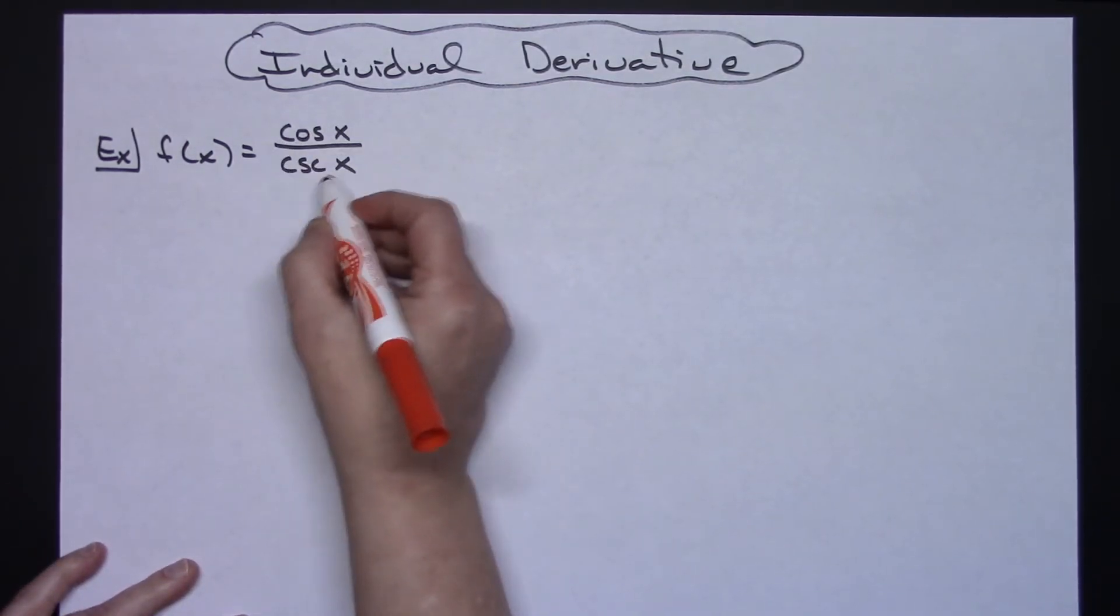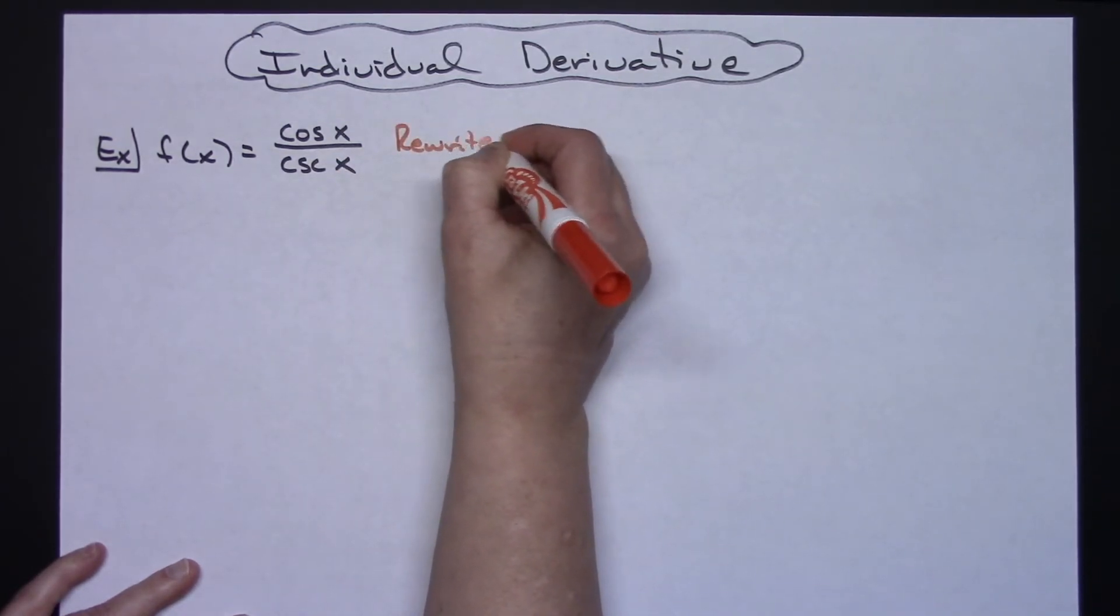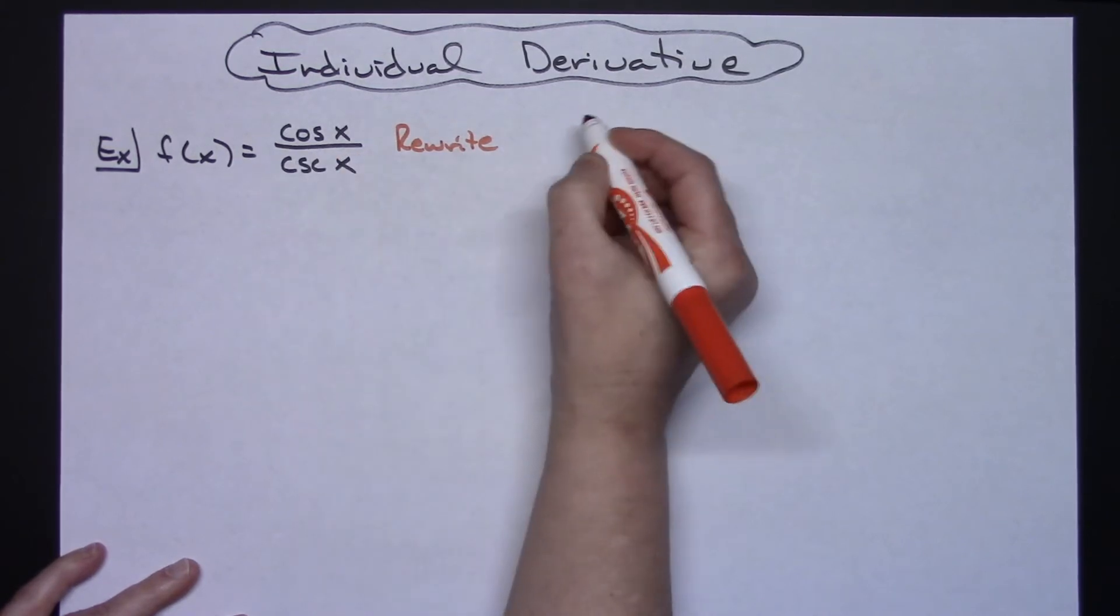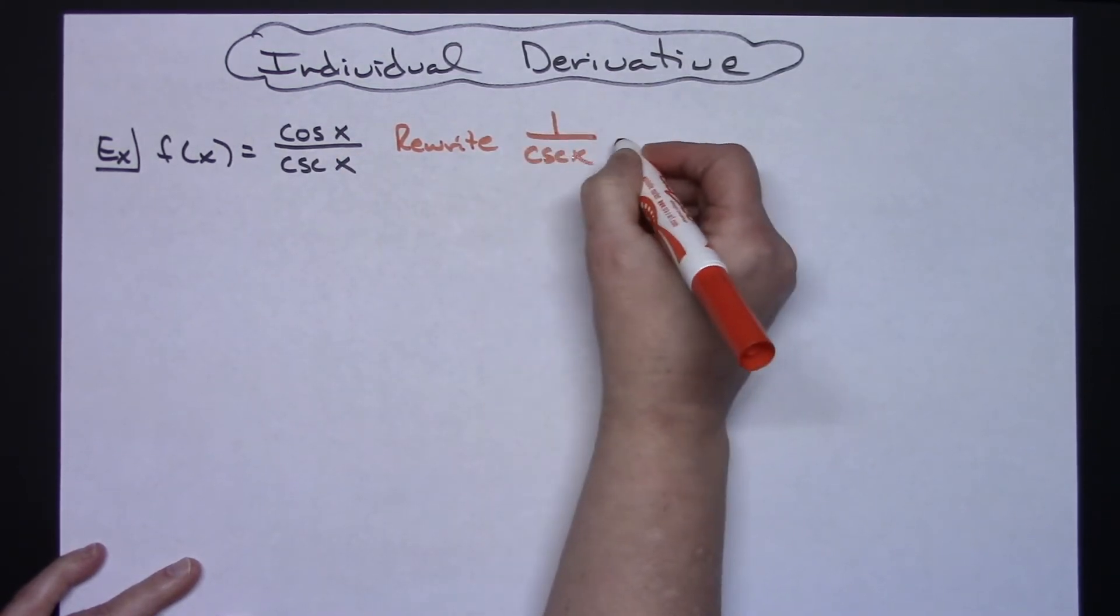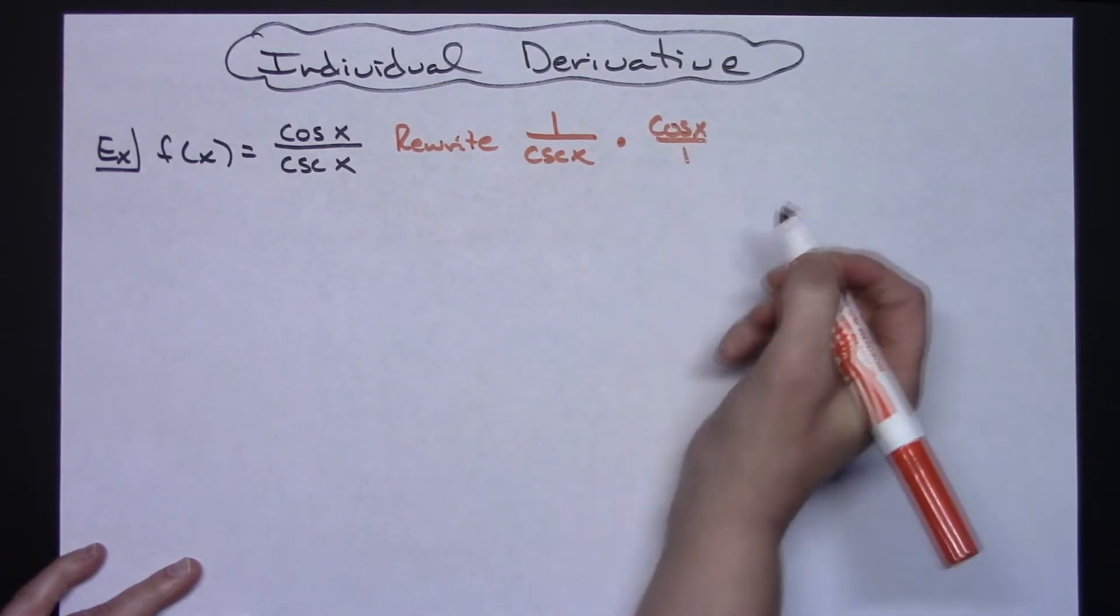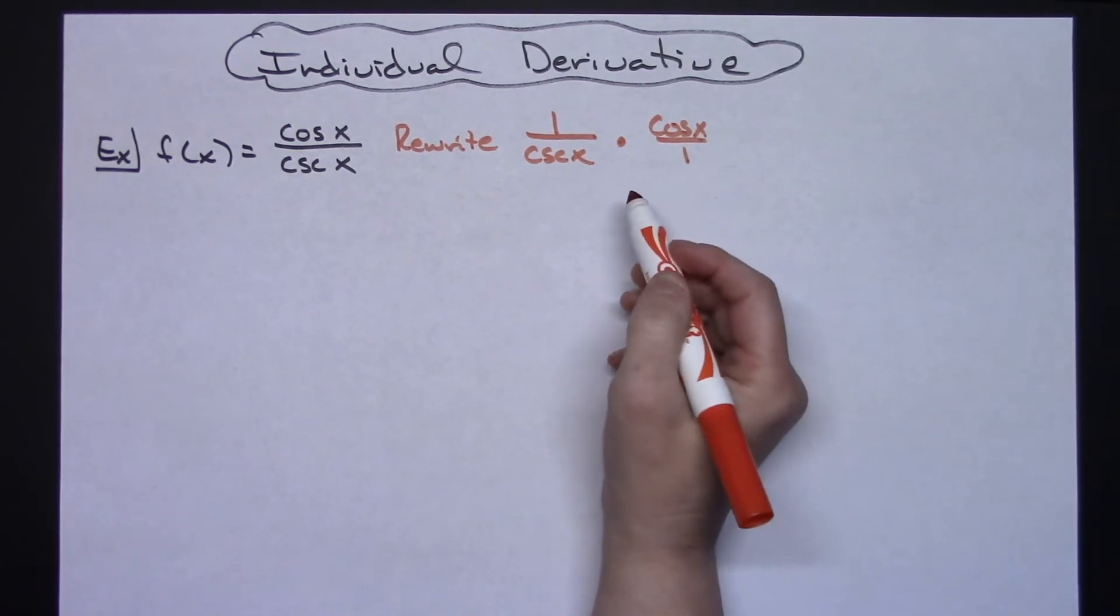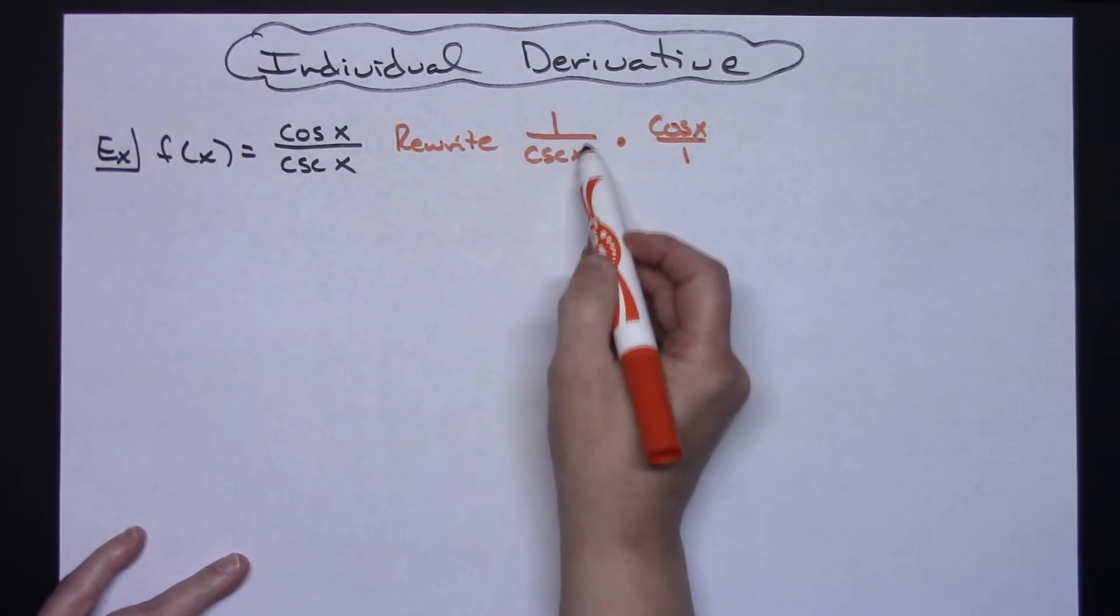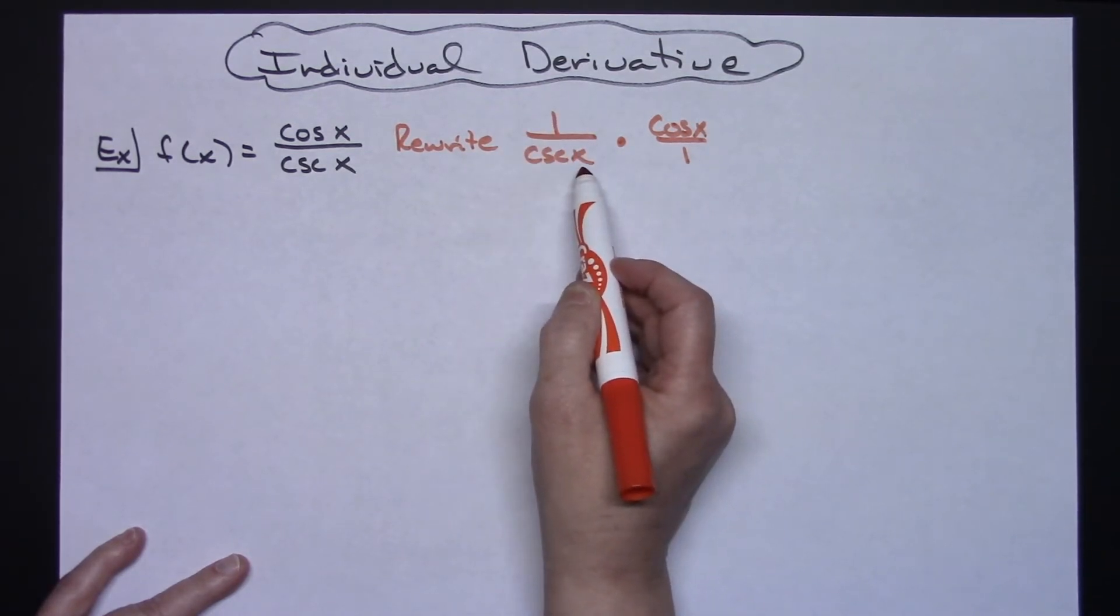First off, what I'm going to do with this is I am going to attempt to rewrite it, and I want to rewrite it into 1 over cosecant x times cosine x over 1. All I did was just separate that numerator and denominator, but I did that because if you're good with your trig identities, 1 over cosecant x is the same thing as sine x.